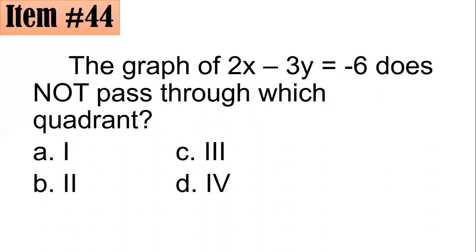Item 44. The graph of 2x - 3y = -6 does not pass through which quadrant? 1, 2, 3, or 4. To do this one, it's important that you have to graph the equation.